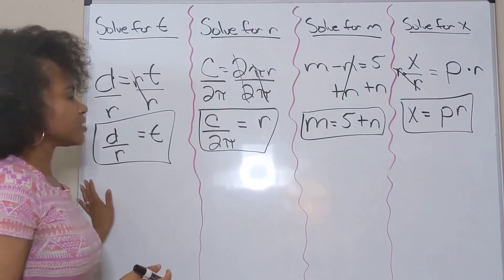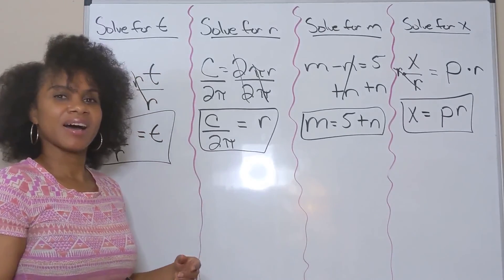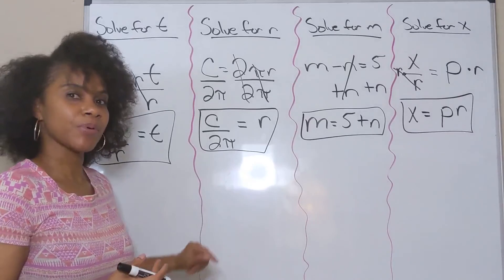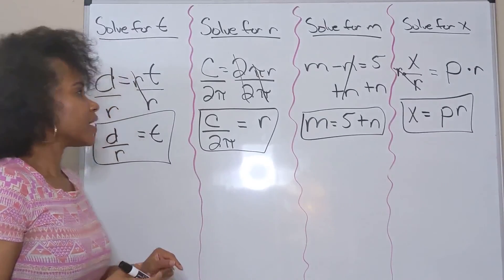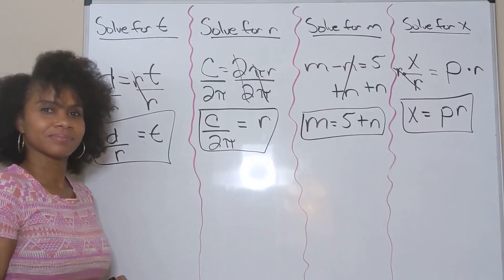When you look at these, they're all really just one-step equations, except you're using letters instead of numbers. But you're still using your inverse operations to get your answer. And that is one-step literal equations.